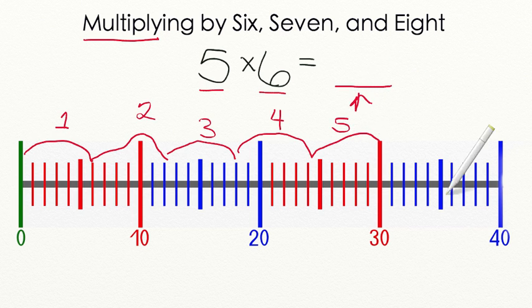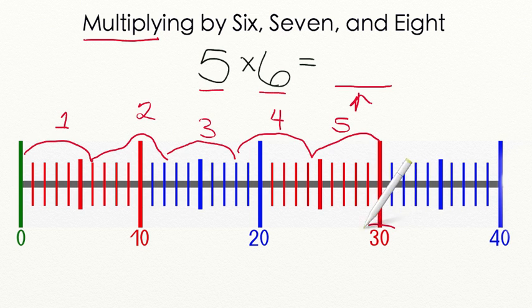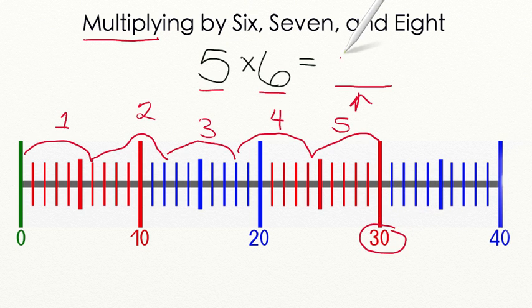We now have 5 groups of 6 each, and that gets us to the number 30. 5 times 6 is equal to 30.